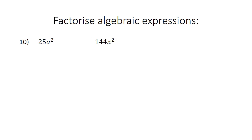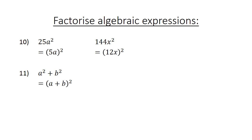Number 10: 25a to the power of 2 is (5a) to the power of 2. 144x to the power of 2 equals (12x) to the power of 2. A to the power of 2 plus b to the power of 2 equals (a plus b) to the power of 2. Number 12: 25a to the power of 2 minus 1. We look for the common factor. First we simplify: (5a) to the power of 2 minus 1 to the power of 2, where 1 squared equals 1.